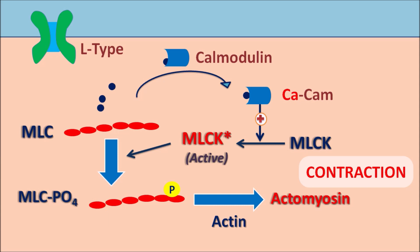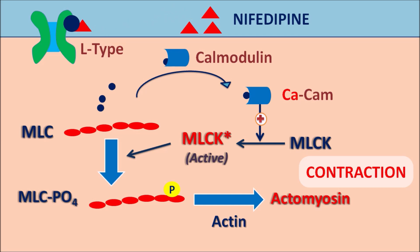In this way, vascular smooth muscle is contracted by calcium ions entering through the L-type calcium channels. These L-type calcium channels have a dihydropyridine binding site. Nifedipine, being a dihydropyridine, binds to this site and inhibits the activity of the L-type calcium channels. When nifedipine blocks these channels, calcium cannot enter the vascular smooth muscle, and contraction cannot be produced. In this way, nifedipine reduces vascular smooth muscle contraction, thereby reducing blood pressure.